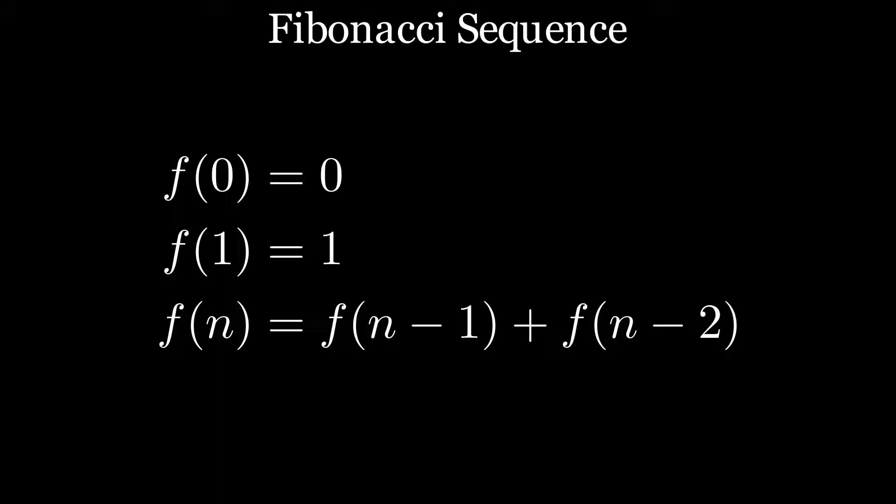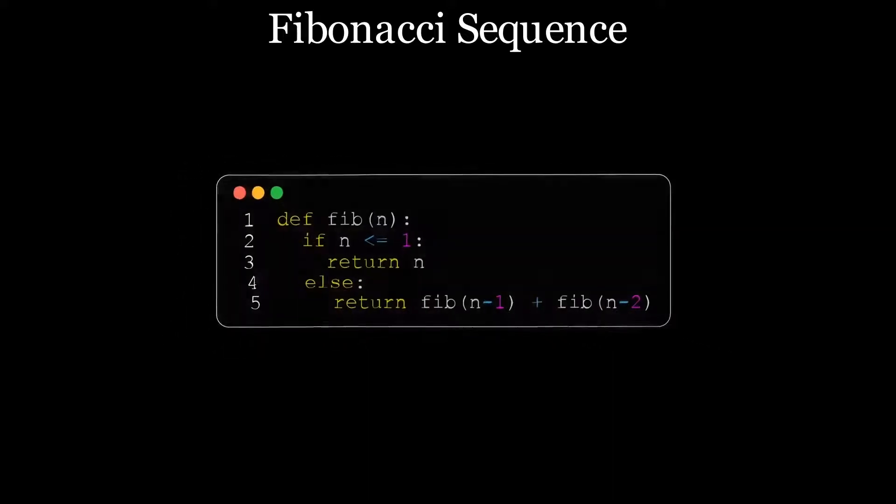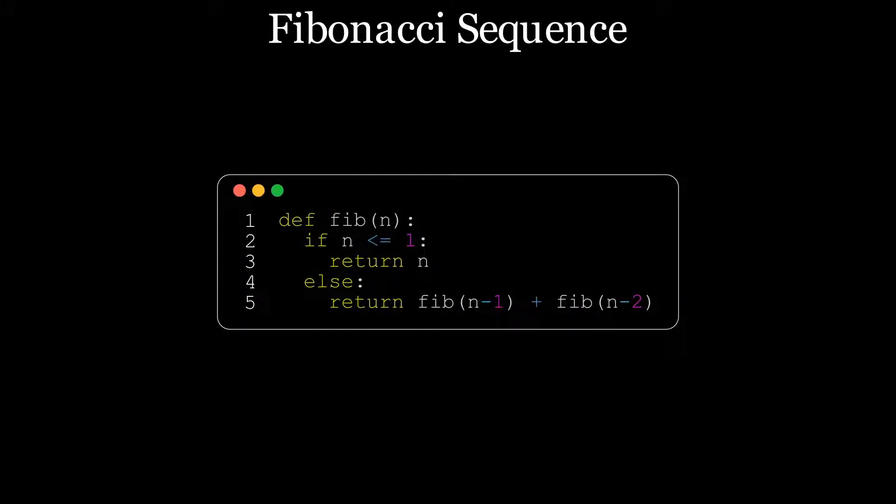It's commonly used as an introductory problem for showing recursion and dynamic programming. In code we'll have a base case for n is less than or equal to 1. We will return n, either 0 or 1. But the magic really happens in the other branch where the return value is going to be the sum of the two previous values in the sequence and we retrieve these through recursion, that is, through the function calling itself.